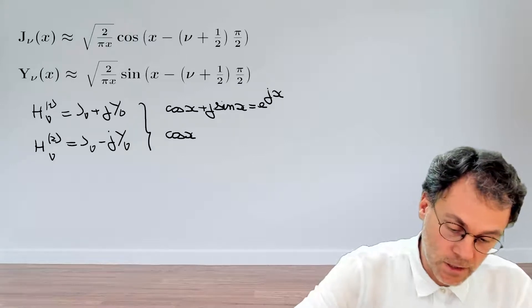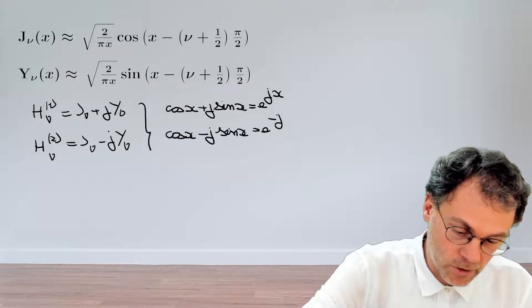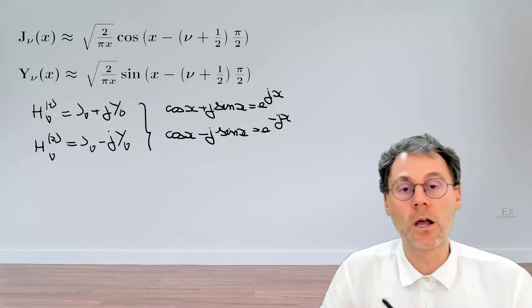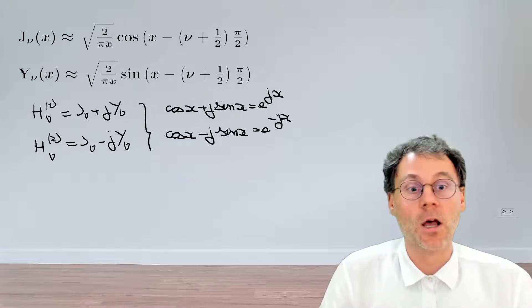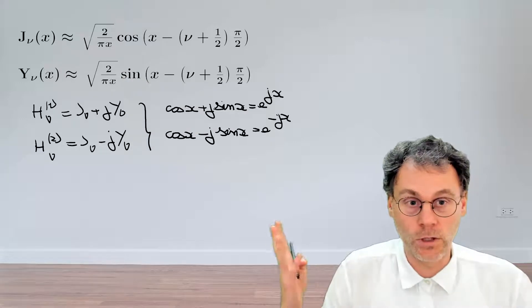And if you have a minus sign here in front of the j, that minus sign will also appear up there. Okay, so that's fairly trivial to derive these expansions, provided, of course, you know the expansions for the j's and the y's, which we assume we do.